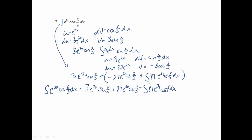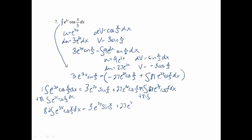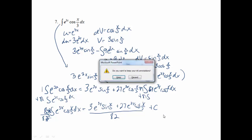I notice my integrals match each other. Adding 81 of the integral to both sides: 1 + 81 = 82 integrals on the left. So 82·∫e^(3x)·cos(x/3) dx = 3e^(3x)·sin(x/3) + 27e^(3x)·cos(x/3). Dividing both sides by 82 gives the final answer, plus C.